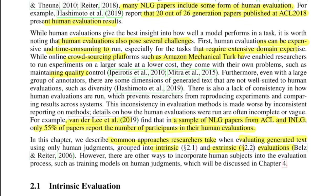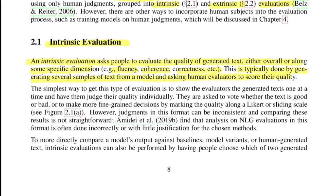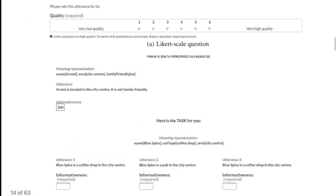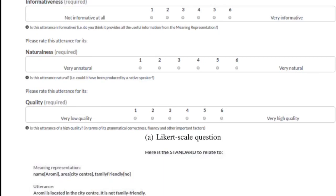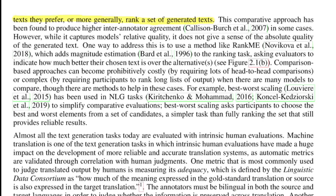Common approaches researchers take to evaluate generated text fall into intrinsic and extrinsic evaluations. In intrinsic evaluation, a given example x is given to some number of evaluators who independently rate it on attributes such as fluency, coherency, and correctness. This is usually done using a Likert or sliding scale, where you quantize values against the attributes being evaluated. For instance, as shown in Figure 2.1, for any given text, informativeness, naturalness, and quality might each be marked on a scale of 1 to 6, where 1 means very low quality and 6 means very high quality.